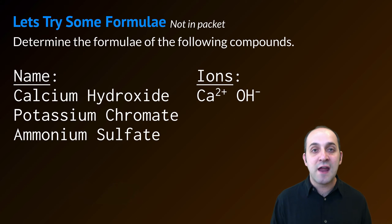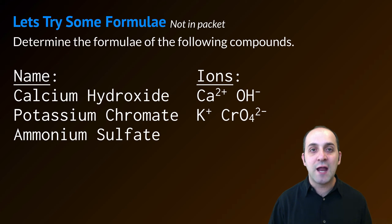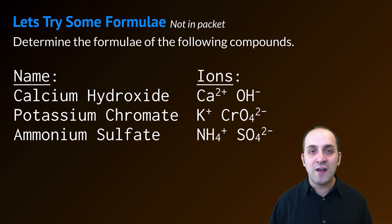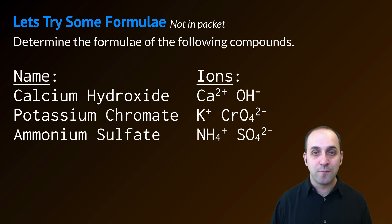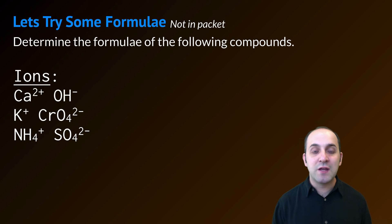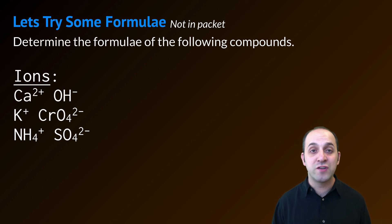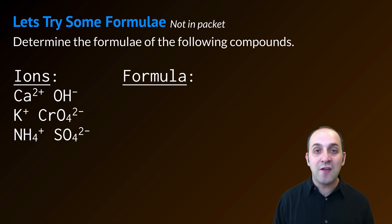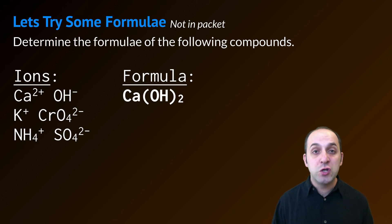Calcium hydroxide is made out of Ca2+ and OH minus. OH minus is the hydroxide ion. Potassium chromate is made out of K+ and CrO4 2 minus. And ammonium sulfate is made out of NH4+ and SO4 2 minus. Now that I know the ions, I can put them together into compounds, just remembering that the sum of the ionic charges has to equal zero. So for calcium hydroxide, I'm going to need two hydroxide ions, so I put them in parentheses and put a 2 outside of it.